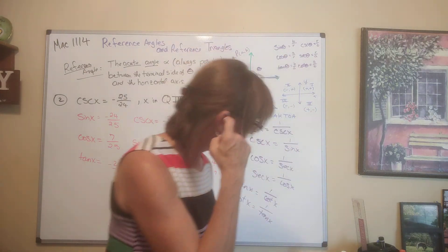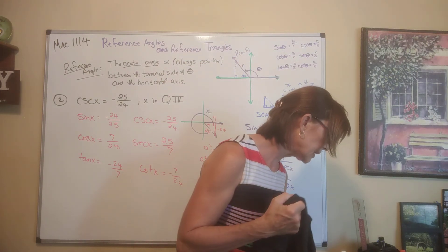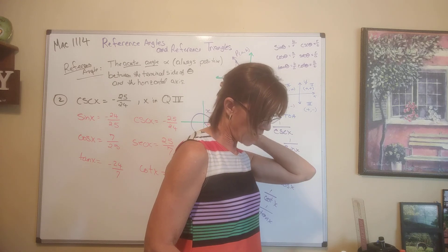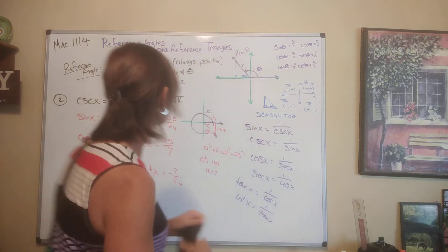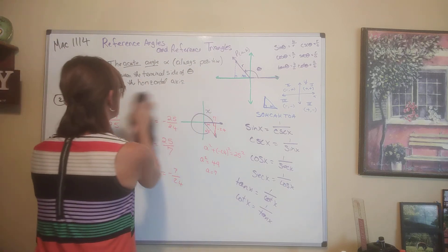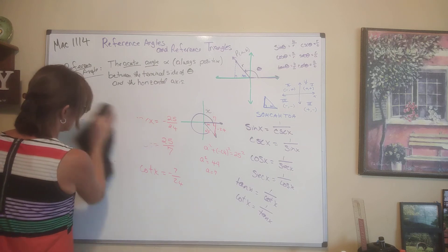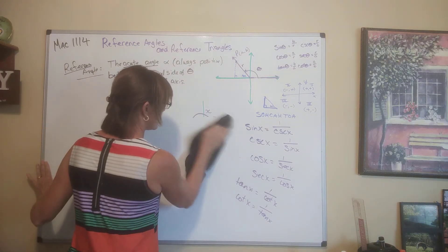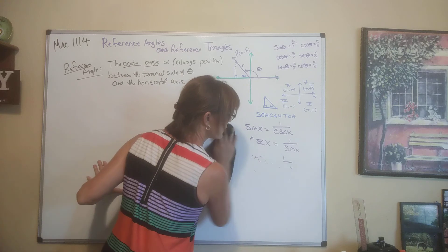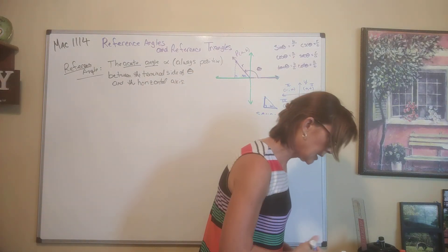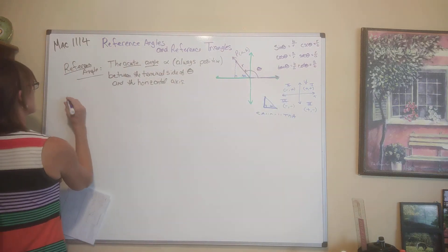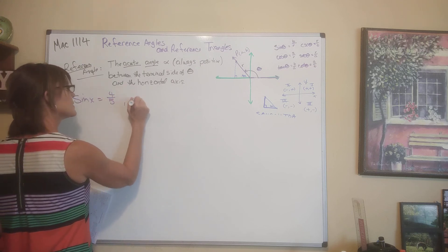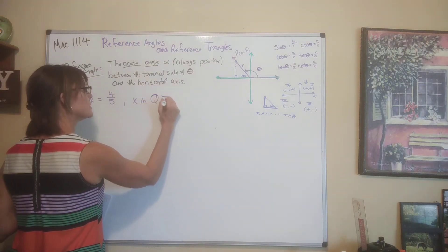Here's another example. Find the other five trig functions given that the sine of x is 4 over 5 and x is in quadrant 2.